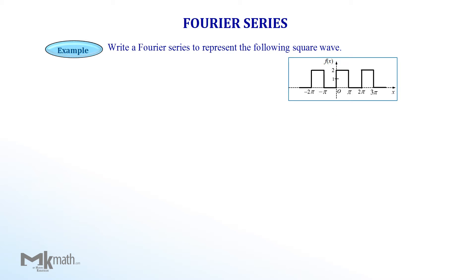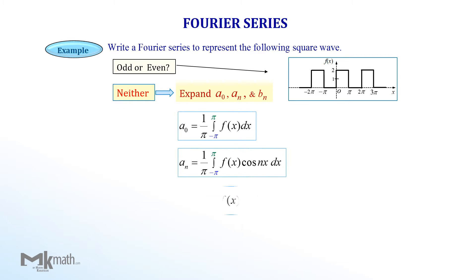Let's look at the example. We need to write the Fourier series for the given wave. First, find out if this wave is odd or even function since we may be able to reduce our work. Unfortunately, this is not either odd or even function, so we need to use all formulas to find the Fourier series.